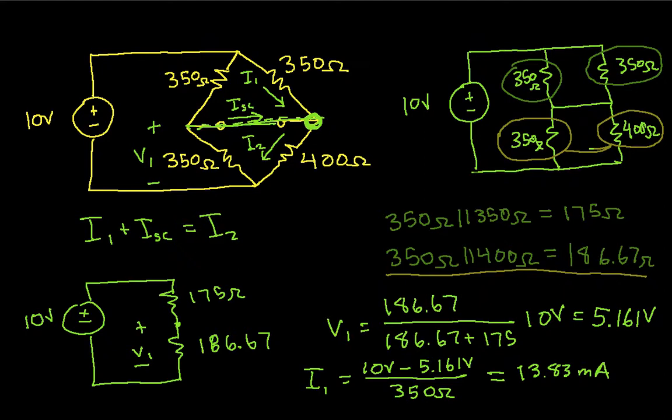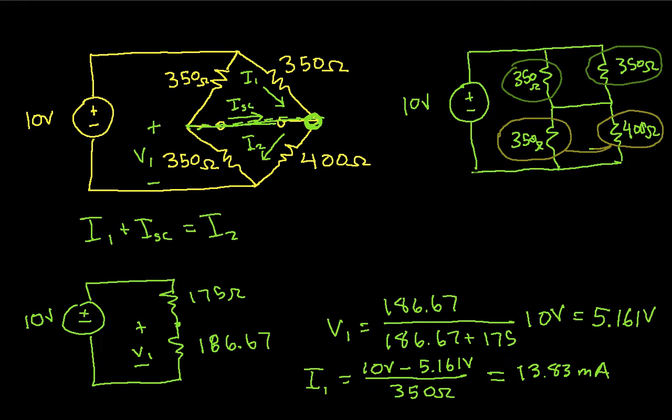And then I2, here we'll clear out a little bit of space for I2. I2 will be 5.161 volts over 400 ohms, which when I compute this guy, gives me 12.90 milliamps.